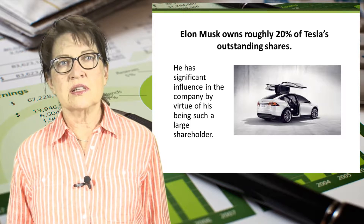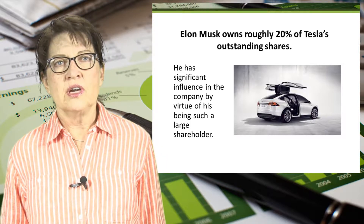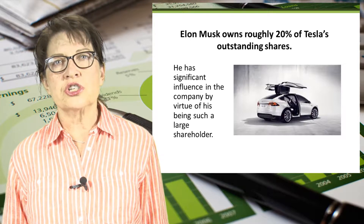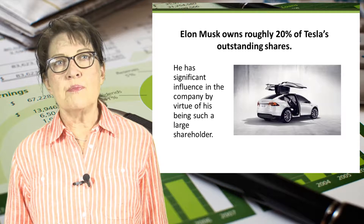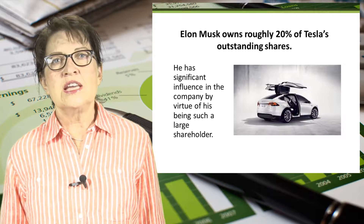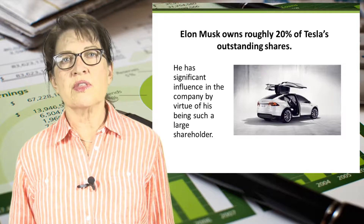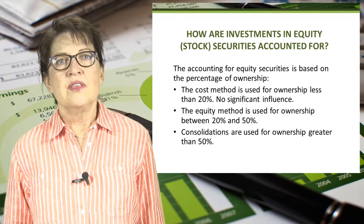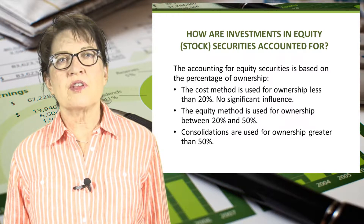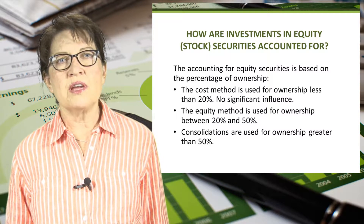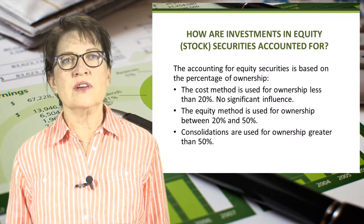As CEO of Tesla, he has to answer to the board of directors. However, since he is such a large shareholder, he has significant influence on who makes up the board of directors. He can use his votes to get people on the board that will agree with him. The accounting for investment in the stock of a company must be separated into three categories based on the investor's level of influence over the investee's company.